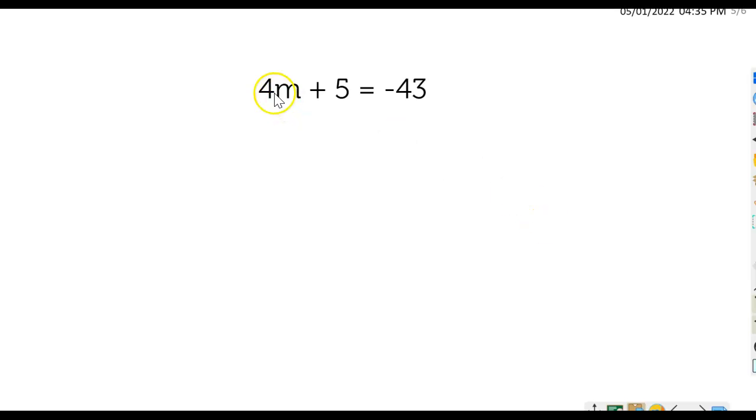So let's go ahead and do that. I see right here the variable is m and it's part of a term, right? This is the variable term, 4m. There are two terms on the left side of the equation. So we have 4m, that's a term, and then we have a constant term which is the 5. So we want to first get rid of the constant term.